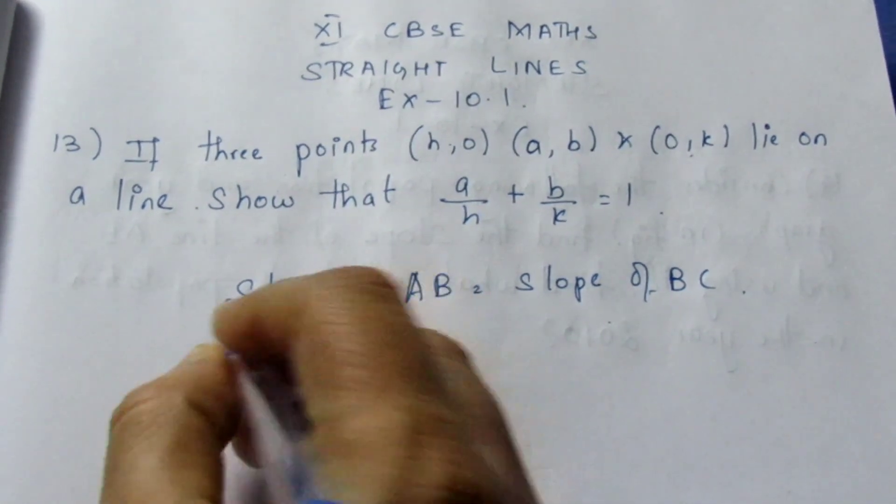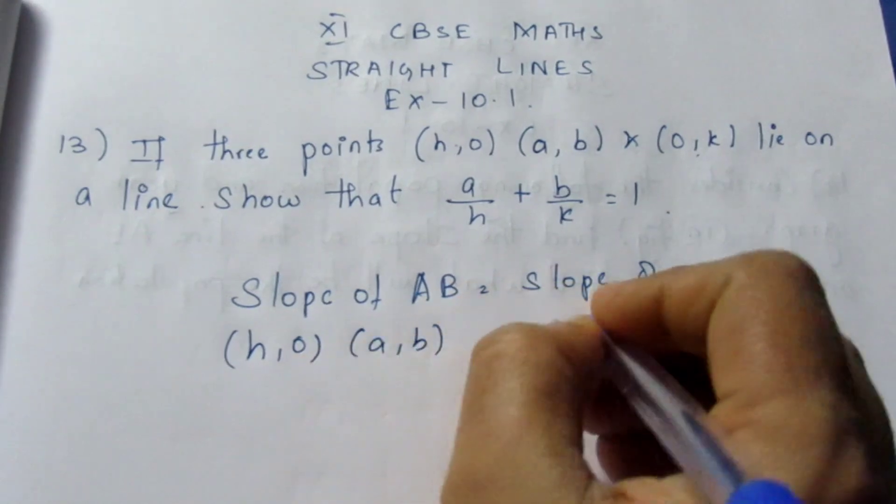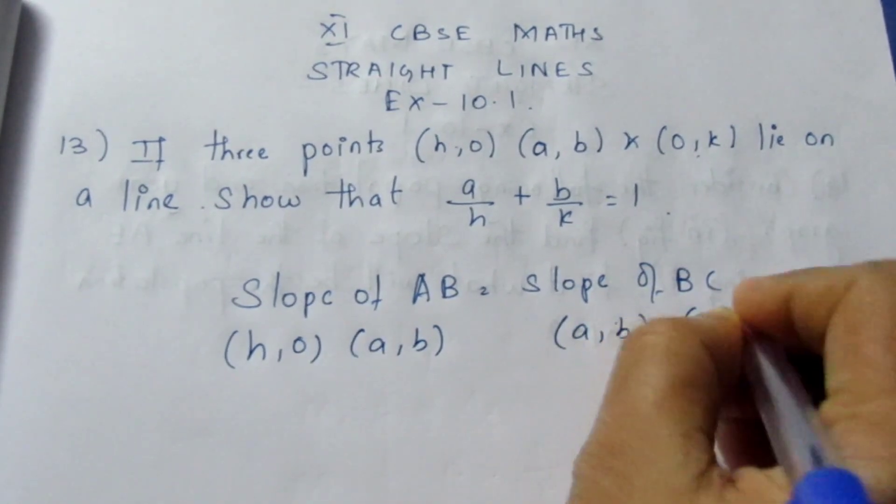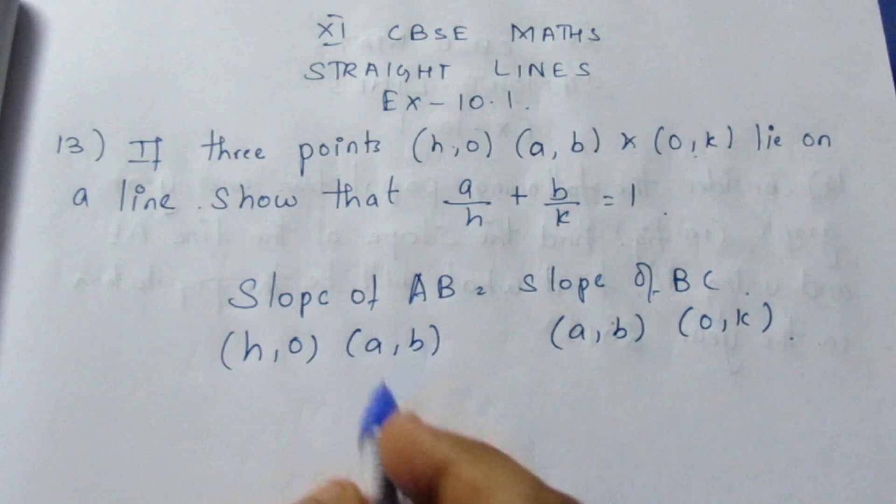For A, it is (h,0). For B, it is (a,b). Here C is (0,k). Now substitute the formula.